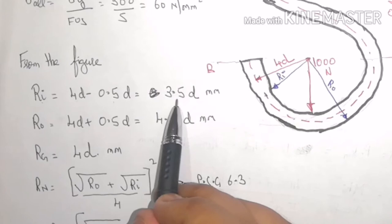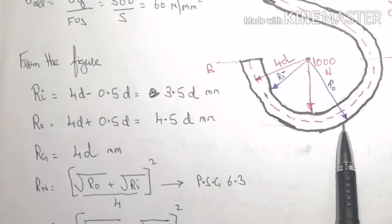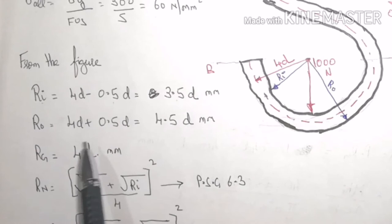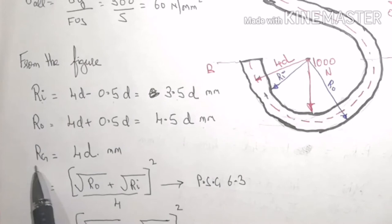Similarly, Ro will be equal to Rg plus R, or I can say Rg plus d by 2. So it is 4D plus 0.5D, that is 4.5D. Rg is already given 4D.